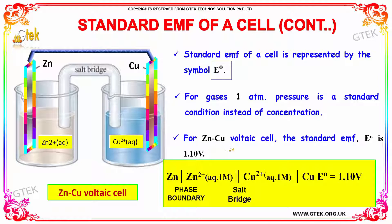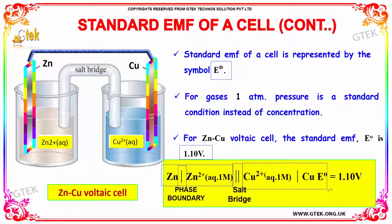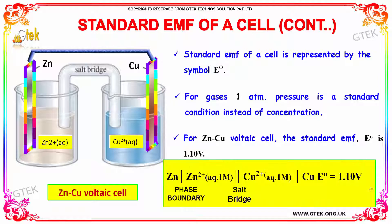For the Zinc-Copper cell, the standard EMF E0 is 1.10 volts. Here you can see the zinc electrode. This is the phase boundary, this one is the salt bridge, and this one is the copper electrode, having the E0 value of 1.10 volts.